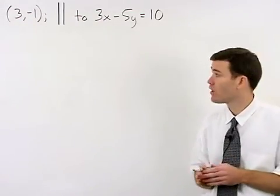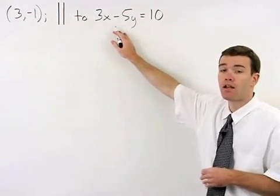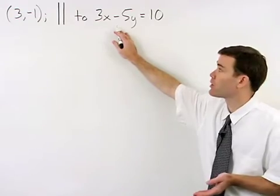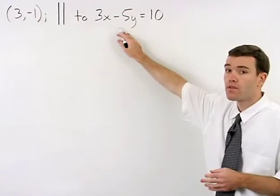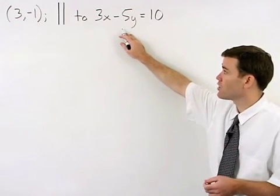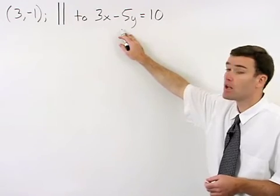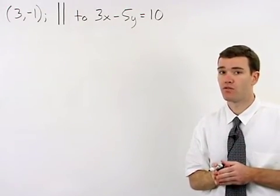Remember, however, that if our line is parallel to this other line, it will have the same slope as this line. So our first task is to figure out what the slope of this line is, and we do that by converting its equation to slope-intercept or y equals mx plus b form.